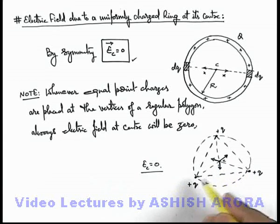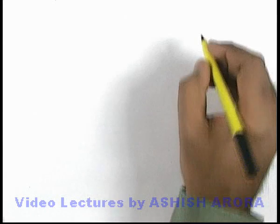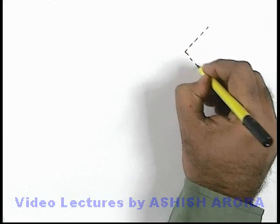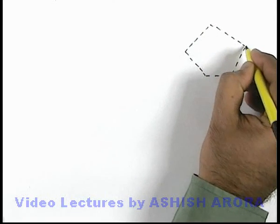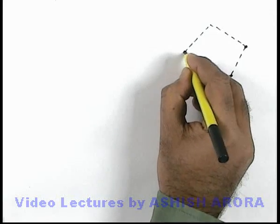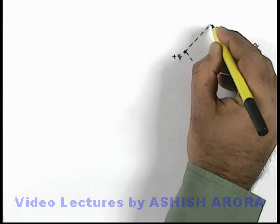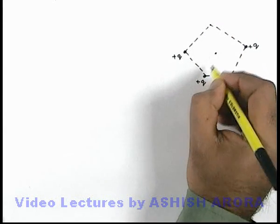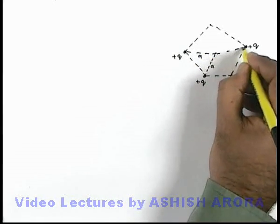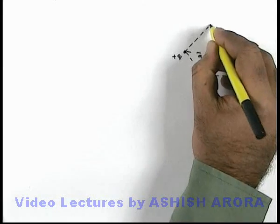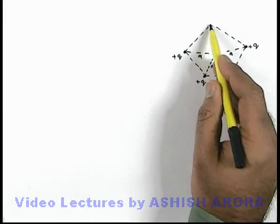Let us have some more physical application based on this concept. If a similar situation is considered for a regular pentagon — if this is a regular pentagon and at four corners we place equal charges +q while the fifth corner is vacant — and the center of the pentagon is located at a distance a from all the vertices, then if we place a fifth charge at that vertex, the net electric field at the center would be zero.